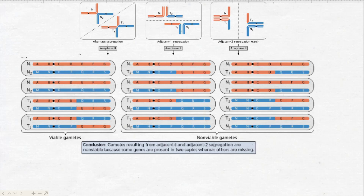Chimpanzees, gorillas, and orangutans all have 48 chromosomes whereas humans have 46. According to research, a Robertsonian translocation took place in a human ancestor, creating a large metacentric chromosome from the two long arms of the ancestral acrocentric chromosomes and a small chromosome consisting of two short arms, leading to a reduced human chromosome number.